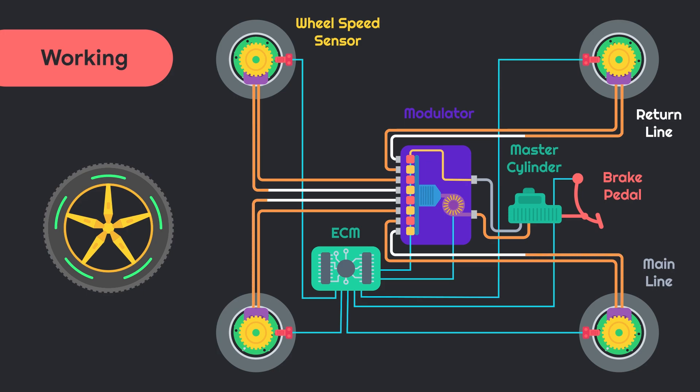As soon as locking starts on the signal of sensor, ECM releases the pressure of oil by closing the supply valve and opening the release valve simultaneously. This process repeats until vehicle slows or completely rests as per the driver's input. This ensures efficient braking of vehicle with minimum amount of skid.